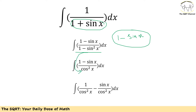Keeping that as is, we now need to split the term into two parts: 1 over cosine squared of x, minus sine of x over cosine squared of x. We are going to solve these two sub-problems in two different sections.